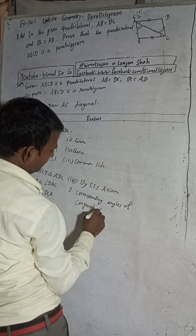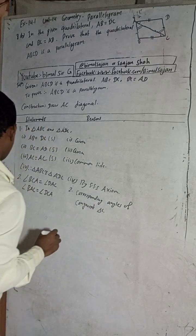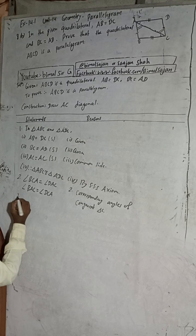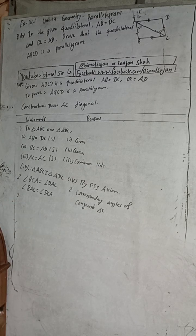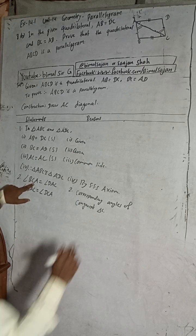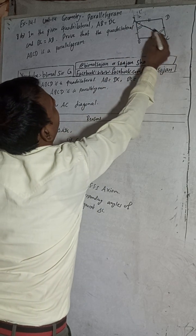From the congruent triangles, these angles being equal — since angle BCA = angle DAC and angle BAC = angle DCA — these are alternate angles. When alternate angles are equal, we can say AD is parallel to BC.